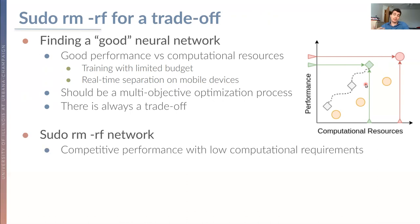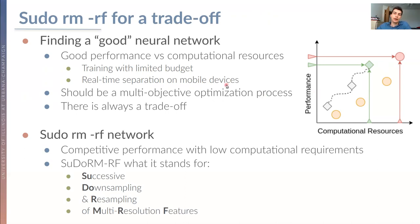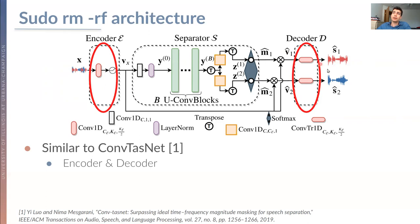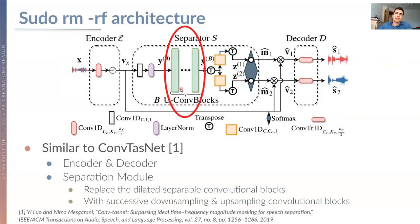SudoRaMRF is actually able to achieve competitive performance with low computational requirements. MRF stands for successive downsampling and resampling of multi-resolution features. The overall SudoRaMRF architecture is very similar to Conv-TasNet: the encoder and decoder are similar to Conv-TasNet, and what we change is inside the separation module — we replace the dilated separable convolutional blocks with successive downsampling and upsampling convolutional blocks.